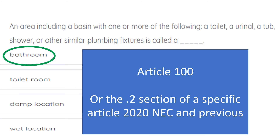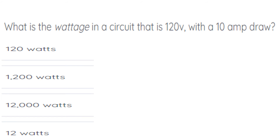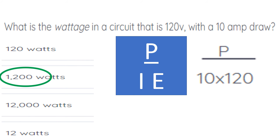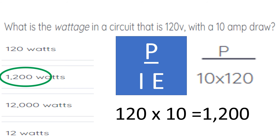What is the wattage in a circuit that is 120 volts with a 10 amp draw? The correct answer is 1,200 watts. We're going to use the power formula — just plug in what you know. We know the amperage and we know the voltage. We take 120 multiplied by 10, and that equals 1,200 watts.